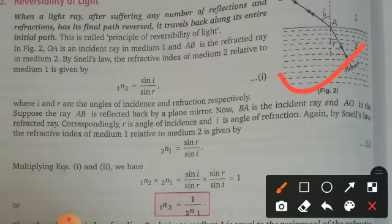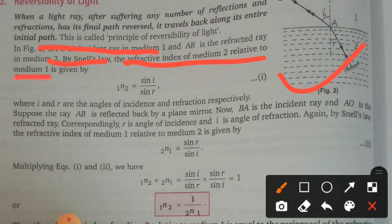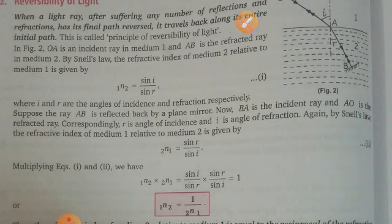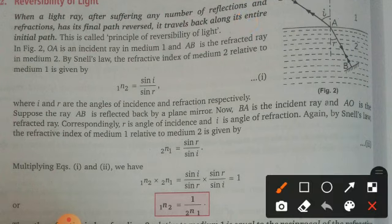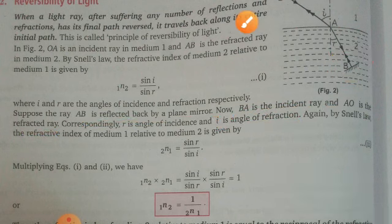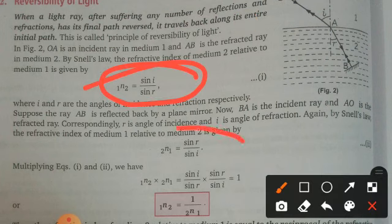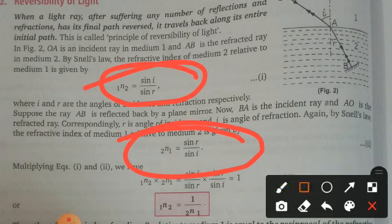By Snell's law, the refractive index of medium 2 relative to the first is ₁n₂ = sin i / sin r. Suppose ray AB is reflected back by a plane mirror at point B. Then BA becomes the incident ray and OA is the refracted ray. Applying Snell's law again, the refractive index of medium 1 with respect to medium 2 is ₂n₁ = sin r / sin i. Multiplying both equations, we get ₁n₂ × ₂n₁ = 1, meaning ₁n₂ = 1 / ₂n₁.